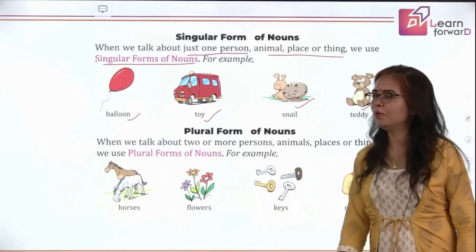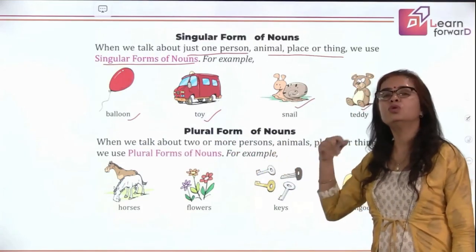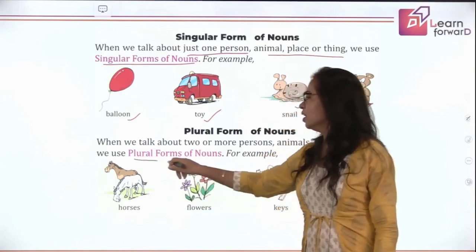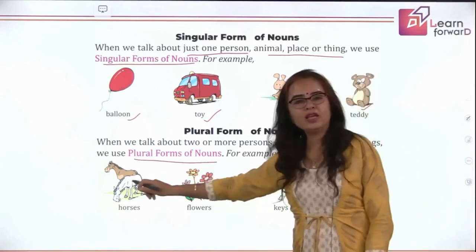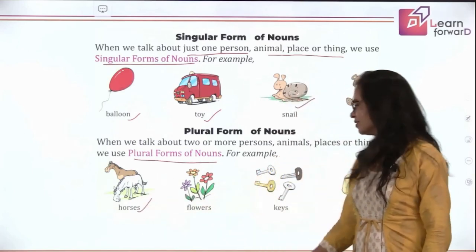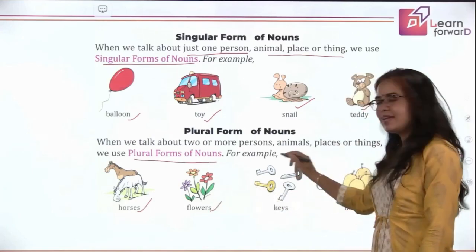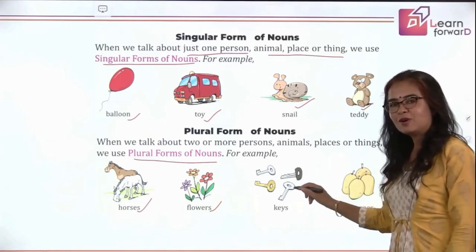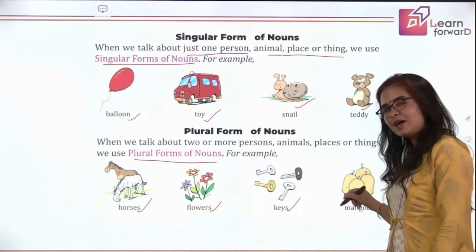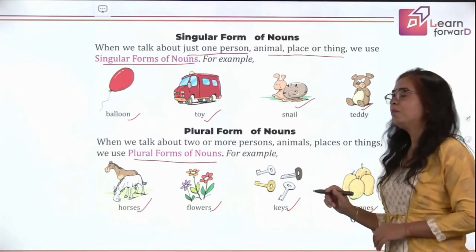Now let's move to the plural form of nouns. When we talk about more than one, that means many — that becomes the plural form. Here, how many horses do you see? Two horses — that is plural. The flowers are three, also plural. How many keys? More than one — plural form of key. And four mangoes — again the plural form.